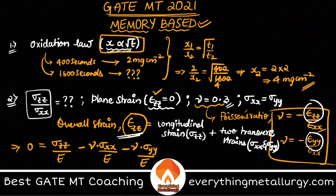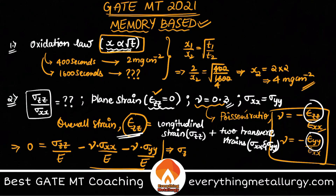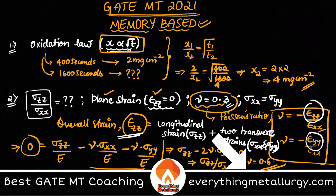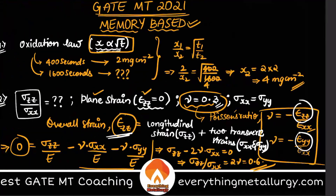From σ_zz − 2ν·σ_xx = 0, we get σ_zz / σ_xx = 2ν. With ν = 0.3, the answer is 0.6. The key is going back to the basics of the overall strain formula and understanding how strain is generated in plane strain condition, where ε_zz = 0 is the crucial constraint.